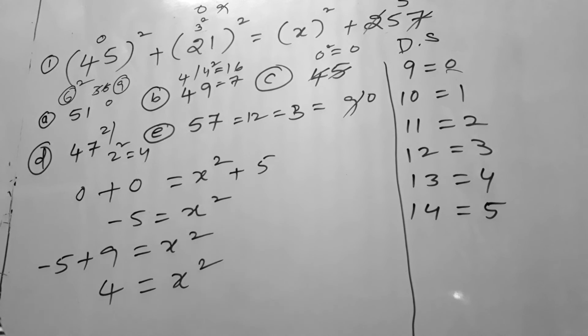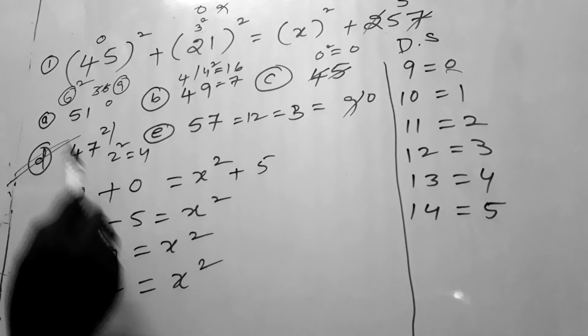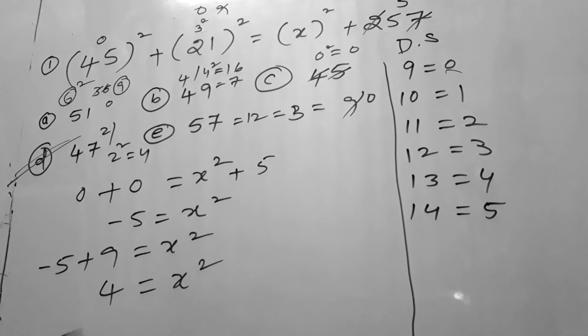So from the answer options alone, D option has digital sum 4. So our right answer is 47. X value is 47.